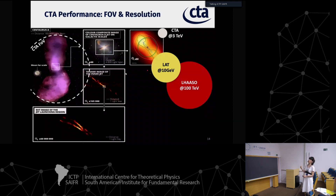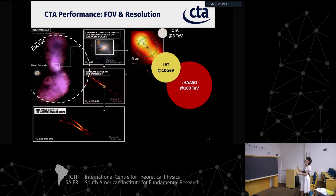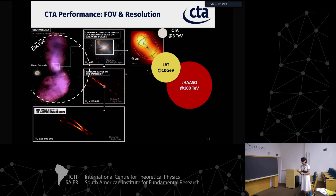For you to have an idea of the field of view of CTA - this is Centaurus A, which is a radio galaxy. The field of view of CTA is going to be so good that we will be able to see extended sources and resolve them for the first time. If we zoom into the nuclear region of this source and improve the zooming by 80 times, this is going to be the field of view that CTA will resolve in the nuclear region - this is the angular resolution at TeV energies, compared with the poorer resolution of Fermi-LAT at 10 TeV and the even worse resolution of LASSO at 100 TeV.